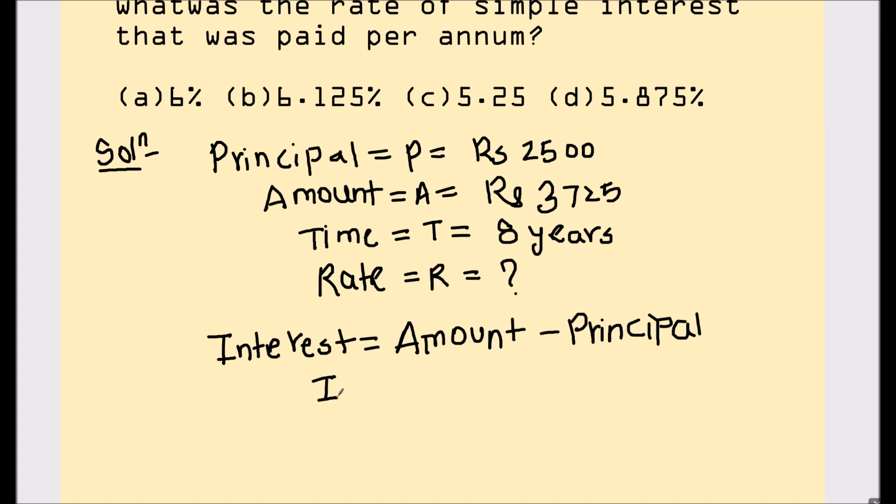Interest we will denote by I equals amount is given as 3725 minus principal is 2500. On subtracting, we get interest as 5 minus 0 is 5, 2 minus 0 is 2, 7 minus 5 is 2, and 3 minus 2 is 1. Our interest comes out to be 1225.